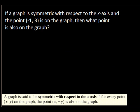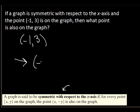Example: if a graph is symmetric with respect to the x-axis and the point (-1, 3) is on the graph, what point is also on the graph? For x-axis symmetry, the x-value stays the same but the y-value changes sign. So the answer is (-1, -3).